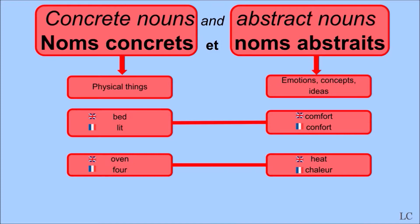Sometimes it can be a bit confusing, so if you're not too sure which is which, try to add a number in front of it. For example, two beds works, but two comforts wouldn't.